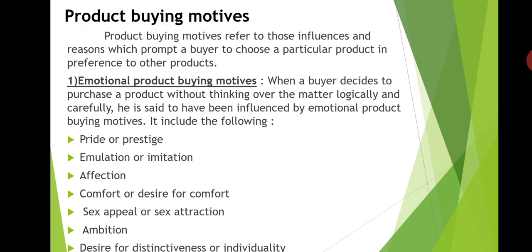Let us discuss one by one. First, product buying motive. Product buying motive means these motives are influences and reasons which prompt a buyer to choose a particular product in preference to other products. For example, the design of the product, shape, dimension, size, color, package, performance, price, and status of the purchaser are the psychological attractions of the product which make the customer buy it. In short, product buying motives refer to all those characteristics of the product which induce a buyer to buy it in preference to other products.